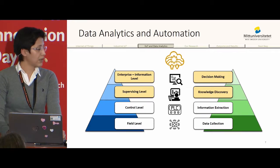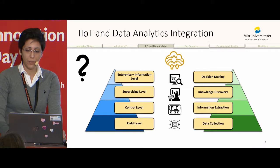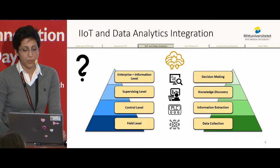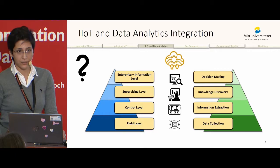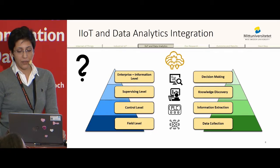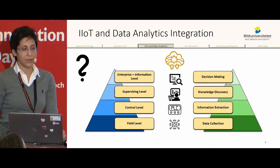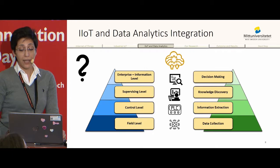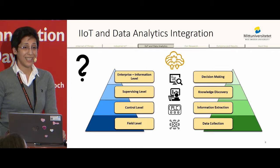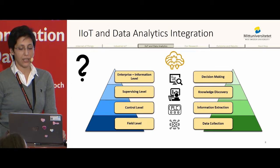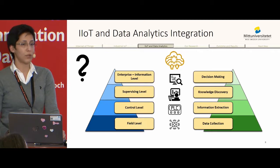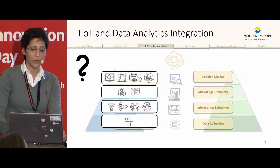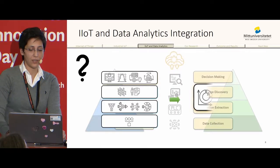So the question here is: how can the processes in the lower layers of an automation system benefit from data analytics, and how can this process actually enhance IoT system performance and contribute to increased efficiency?